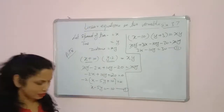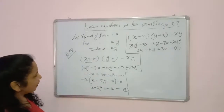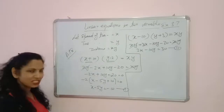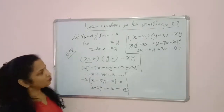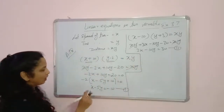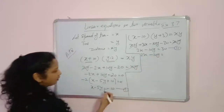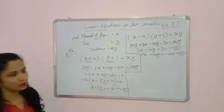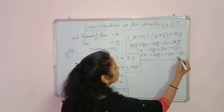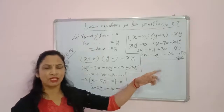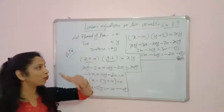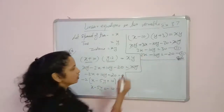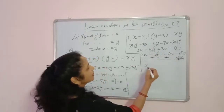Using the elimination method: multiply equation 1 by 2 to get 2x minus 10y equals minus 20. Both y coefficients are now equal. Subtracting gives x equals 50. The speed of the train is 50 km/h.